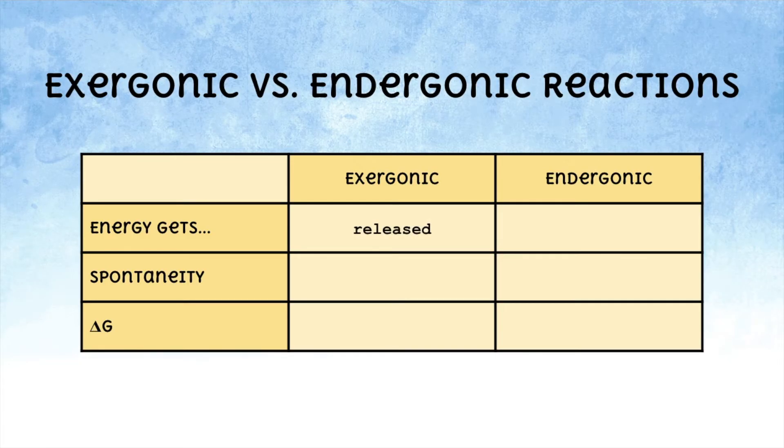whereas in an endergonic reaction energy must be absorbed by the reactants in order for the reaction to occur. Exergonic reactions are spontaneous, meaning that they can occur on their own, while an endergonic reaction is non-spontaneous, meaning that it can't occur on its own since it must absorb energy in order to happen.